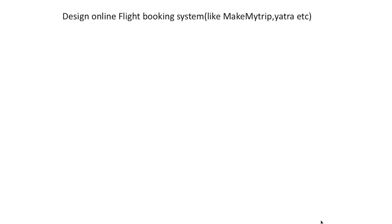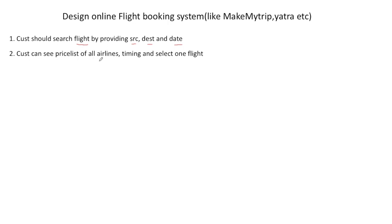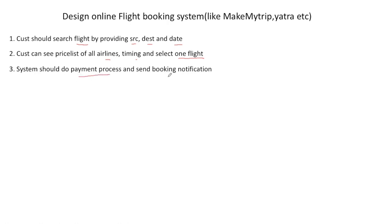The first step is requirements, so we have to ask the requirements from our interviewer. The first requirement is that the customer should be able to search a flight by providing source, destination, and date, and then the system will show all available flights. The second requirement is that the customer can see the price list of all airlines and select a particular flight, seeing airline timings.